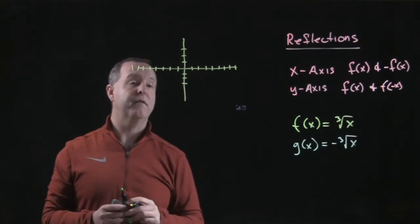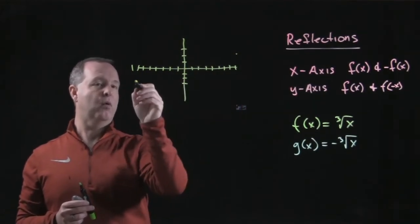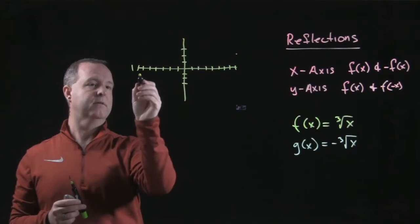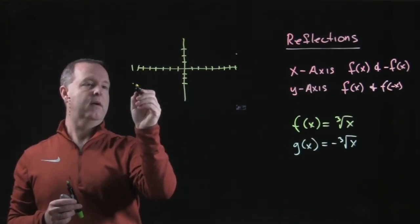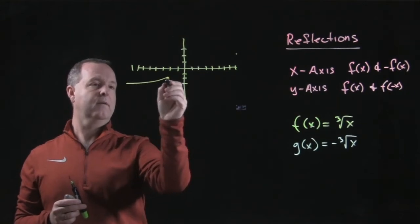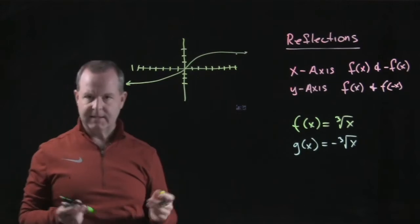The basic cube root function goes through the point (0,0), the point (8,2), and the point (-8,-2). Roughly there, and it has a look similar to that.